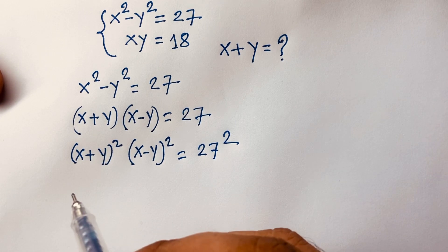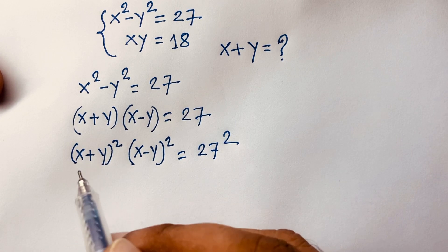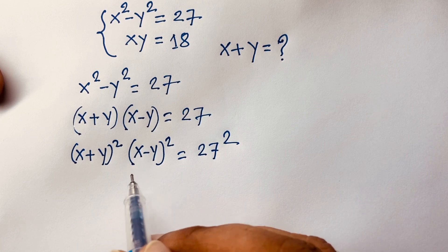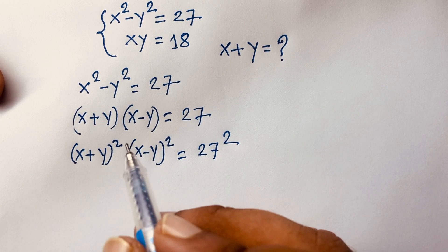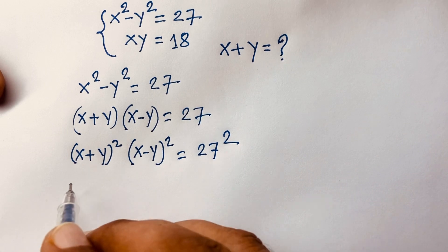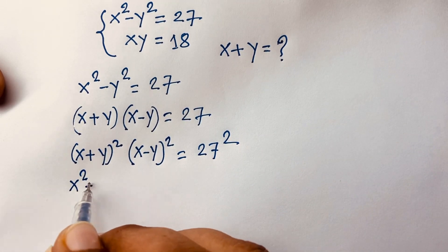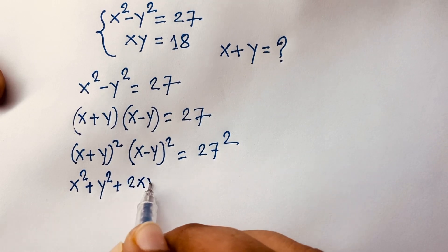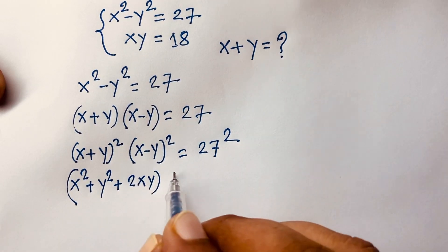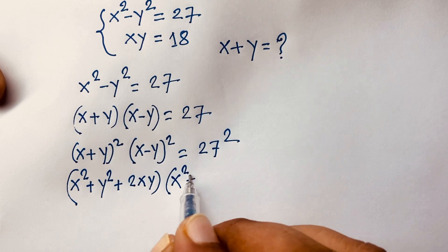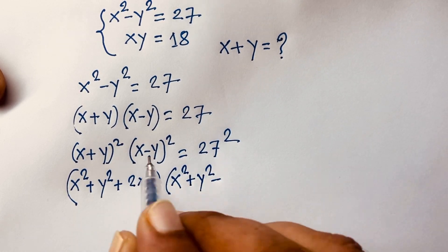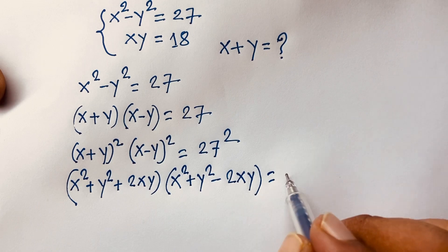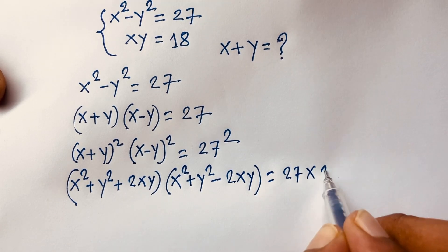I use both sides whole square. Then I can say: a plus b whole square equals a squared plus 2ab plus b squared, and here with minus it will be a squared minus 2ab plus b squared. According to these rules I can say here is x squared plus y squared plus 2xy, times x squared plus y squared minus 2xy, is equal to 27 times 27.